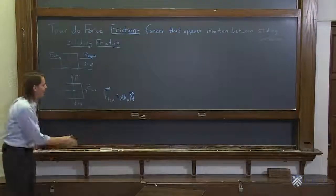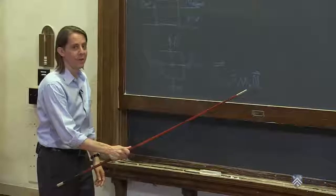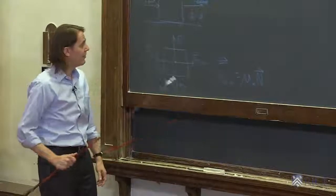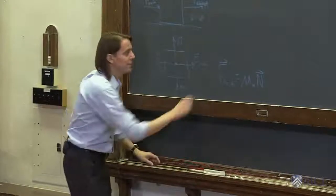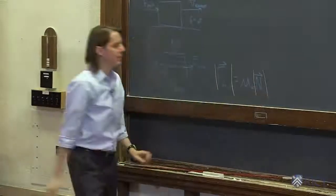I wrote that the friction force vector is equal to the normal force vector. Of course, I'm really just telling you about the magnitudes here. The vectors can't be equal because the normal force and the friction force are in different directions. So I simply forgot to put on the magnitude bars.